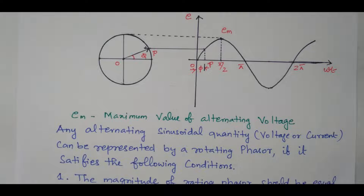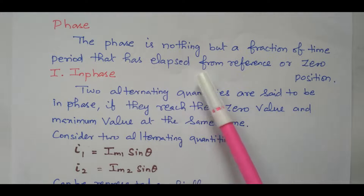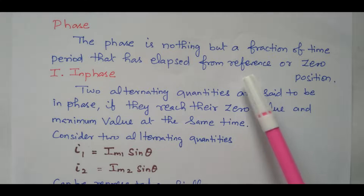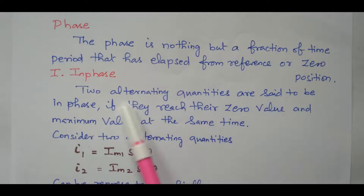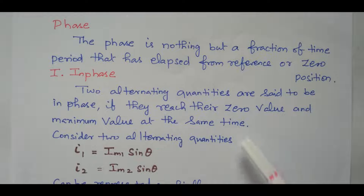Now we will look at in-phase and out-of-phase relations. The phase is nothing but the fraction of the time period that has elapsed from the reference or zero position — how one quantity is deviated from another. The first type is in-phase. Two alternating quantities are said to be in phase if they reach their zero value and maximum value at the same time. If two alternating quantities both start at the same time and end at the same time — reaching zero and maximum simultaneously — that is treated as in-phase.